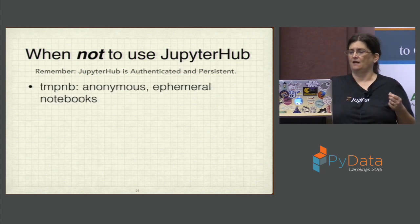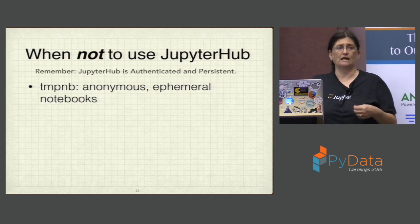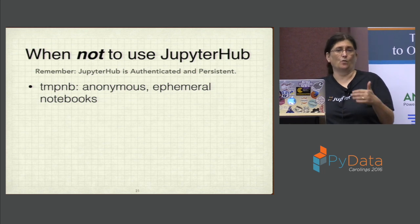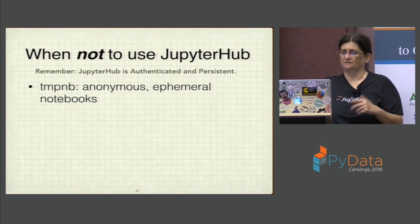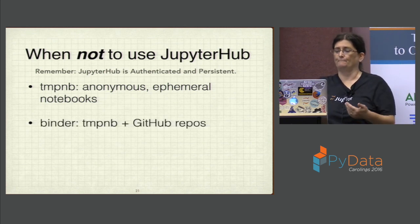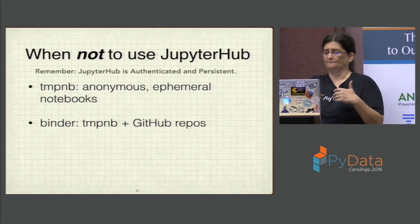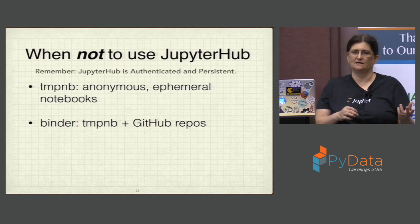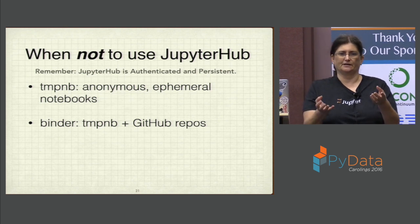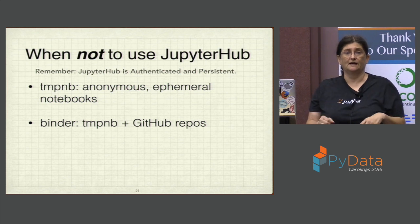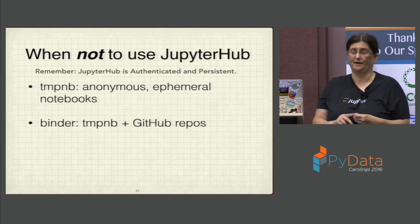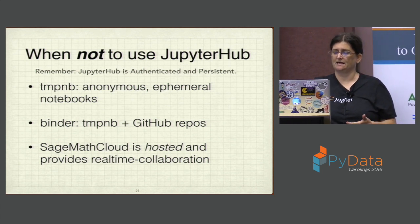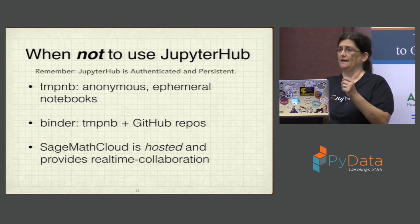When would you not want to use JupyterHub? Remember, JupyterHub is authenticated and persistent. If you want to spin up a notebook and don't care if it goes away after the session, maybe JupyterHub isn't what you need. TempNB lets you create anonymous notebooks that go away. Binder is another project — not managed by Project Jupyter but with contributors — where you can take a GitHub repo, upload it, and people can use the notebook interactively. SageMath Cloud is a good option if you want a hosted service that also enables real-time collaboration over an individual notebook.